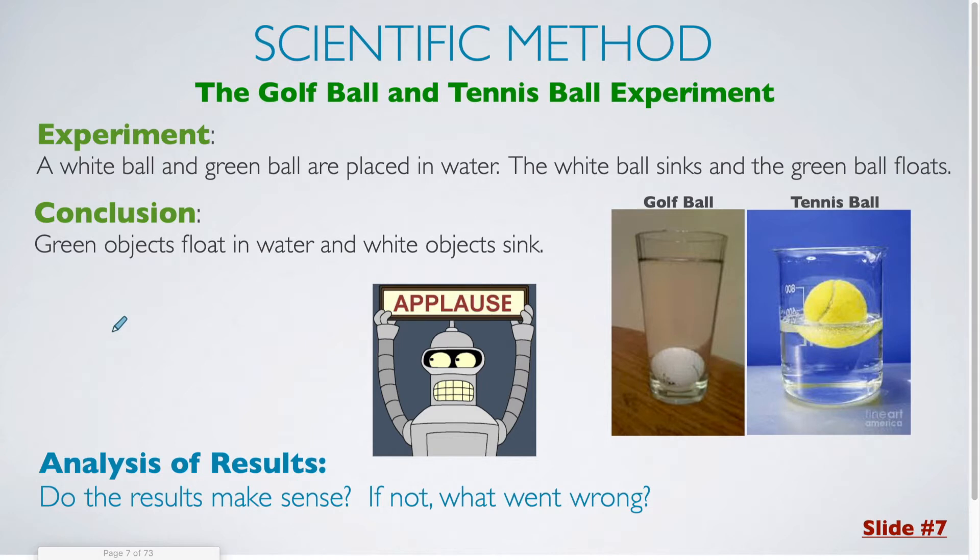Now, you have to think to yourself, do these results make sense? And of course they don't. We know that the real reason why an object would sink or float in water is based on its density. So, what went wrong with our experiment? Because based on what I did, it looks like color had some kind of an impact here.